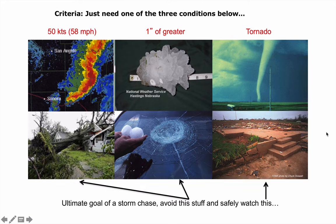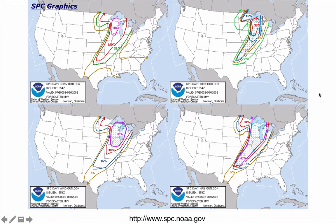The ultimate goal of any storm chase is to not get blown over by straight-line winds, avoid the hail, and safely watch the tornado. One of our favorite resources is the Storm Prediction Center — it's part of NOAA and the National Weather Service. I'm going to show you some of their maps from one of my more recent successful chases.